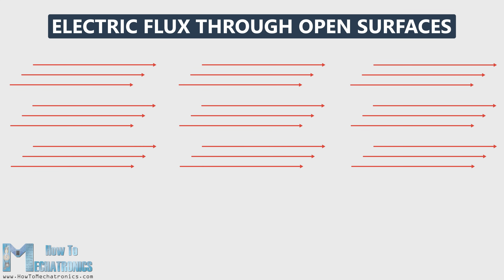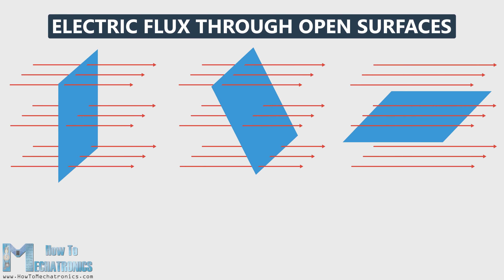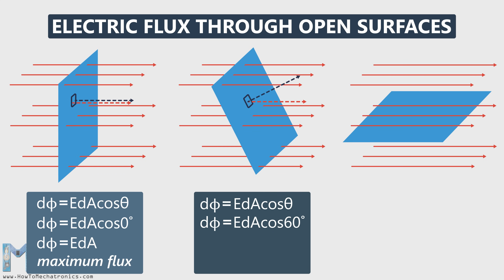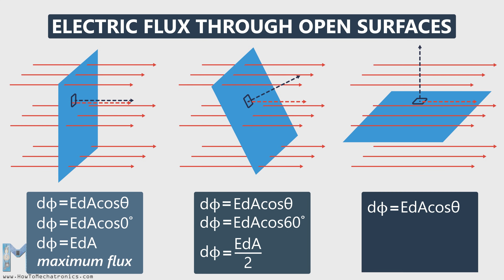To get a better understanding of what electric flux is, I will bring into this electric field three rectangles — these rectangles represent one rectangle with different orientations. In the first case, the area is perpendicular to the electric field and the angle between their vectors theta is zero. Cosine of zero is one, so the electric flux is going to be E times dA — here we have the maximum flux. In the second case, the angle between E and dA theta is 60 degrees and cosine of 60 degrees is 0.5, so the electric flux will be half of E times dA. In the third case, the area is parallel to the electric field, which means their vectors are perpendicular to each other and the angle theta between them is 90 degrees. Cosine of 90 degrees is zero, so the electric flux here will be zero — nothing goes through this rectangle.